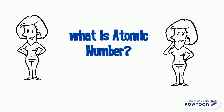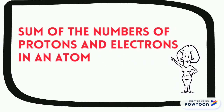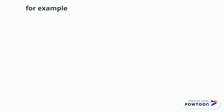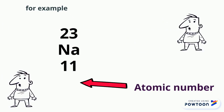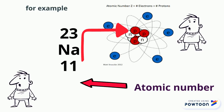Now, what is the atomic number? The atomic number is the number of protons and electrons in an atom. Protons are particles located inside the nucleus; electrons are particles outside the nucleus. As we can see here, number 11 below the symbol Na represents the atomic number, which also equals the proton number and the electron number. The proton number and electron number are the same, and it is also called the atomic number.